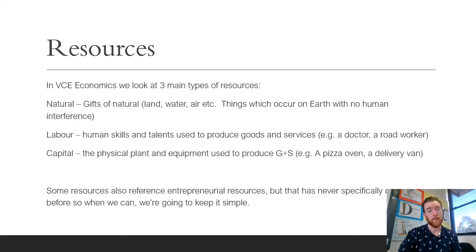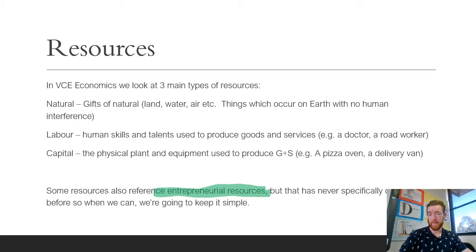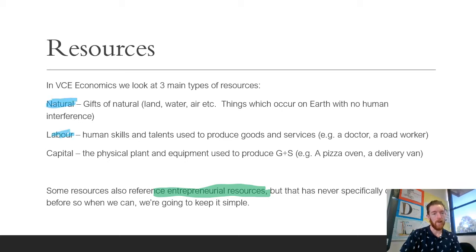This leads on to resources. In VCE Economics, we typically look at three main types of resources. Some references also include entrepreneurial resources, but it's never specifically come up before, so we're going to keep it simple. The three we're going to look at are natural resources, labor resources, and capital resources — all the different types of resources used in production in our economy.